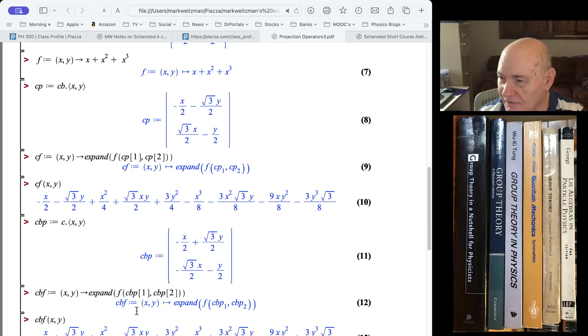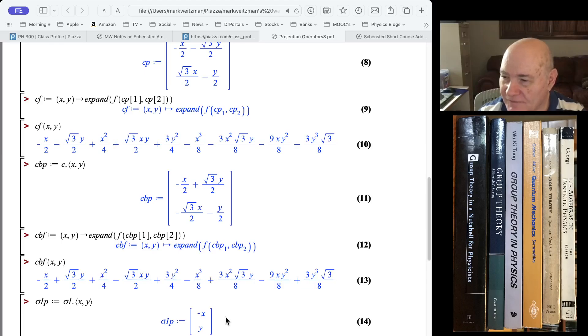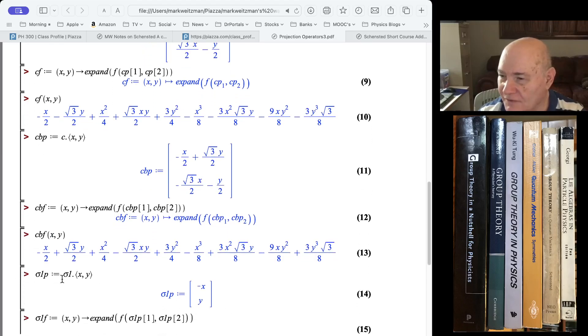And then I apply it to X, Y to see what the real function is. And you can see it's got about 9 terms. 1, 2, 3, 4, 5, 6, 7, 8, 9. It has all terms in mixed polynomials of X, Y up to degree 3 with no constant terms.